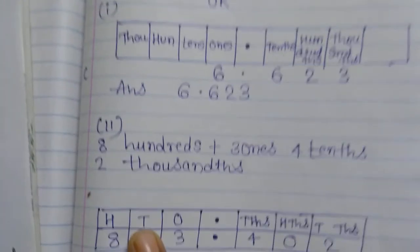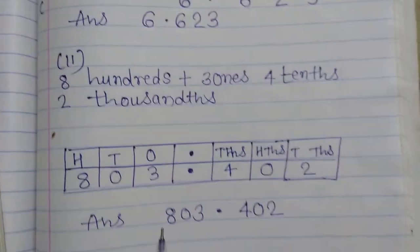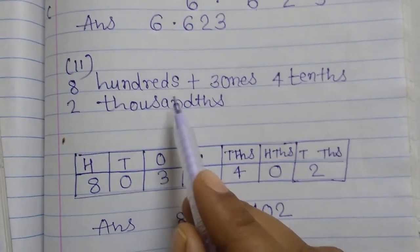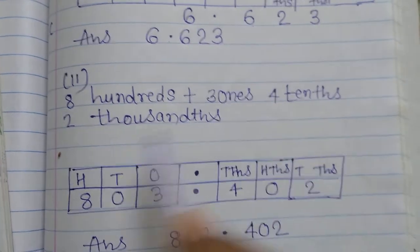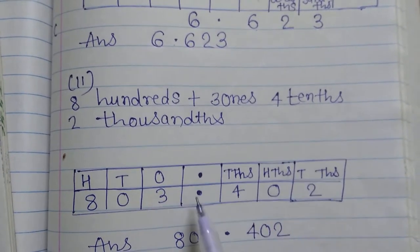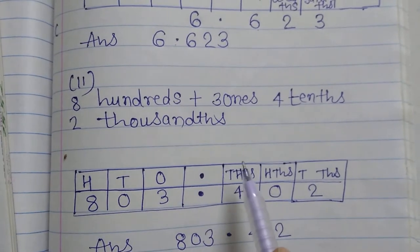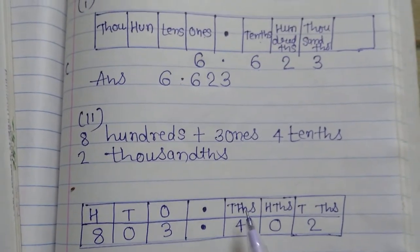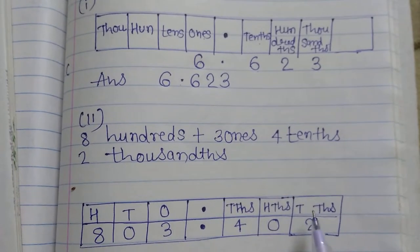Now with this method I will explain the second part of question number 2. Question number 2 part 2 is: eight hundreds, three ones, four tenths, two thousandths. First we make a chart with ones, tens, hundreds on the left and tenths, hundredths, thousandths on the right of the decimal.